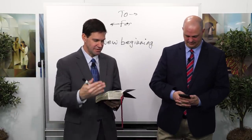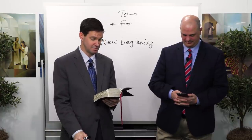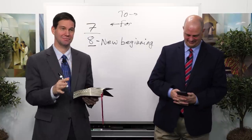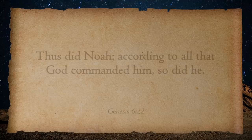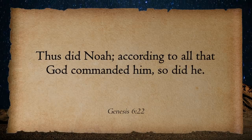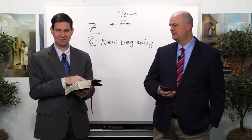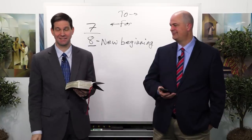Let's finish this chapter with verse 22 — something that is powerful and so simple that it's easy to overlook. Back to small and simple things, great things are brought to pass. 'Thus did Noah according to all that God commanded him, so did he.' God makes the command and Noah did it — he does it. It's the contrast with the people back in Moses chapter 8 where on three occasions it says 'they hearkened not unto his word.' They didn't listen, they didn't obey, they didn't follow — whereas Noah did.